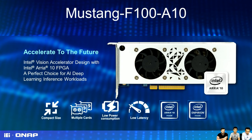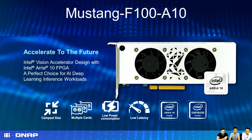The Mustang F100 has an important advantage: ultra-low latency, making it very suitable for factory automation and smart city markets. In factory automation, production lines move very fast and you need to process images quickly to detect and filter out defective products. Currently the Mustang F100 supports Ubuntu Linux OS, with Windows OS support coming soon.